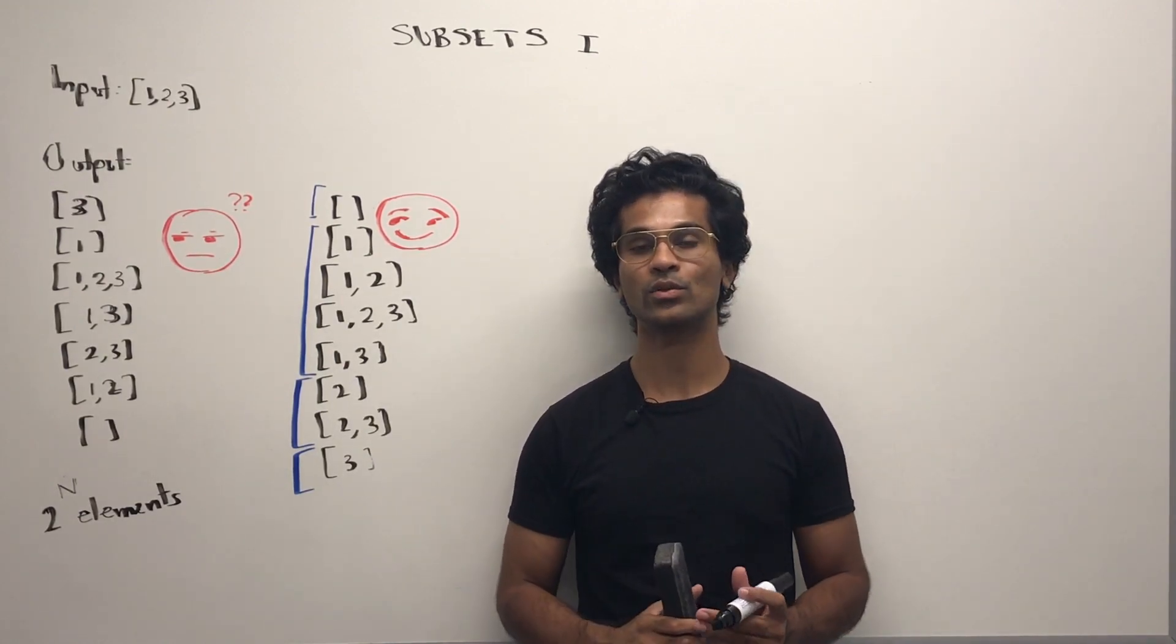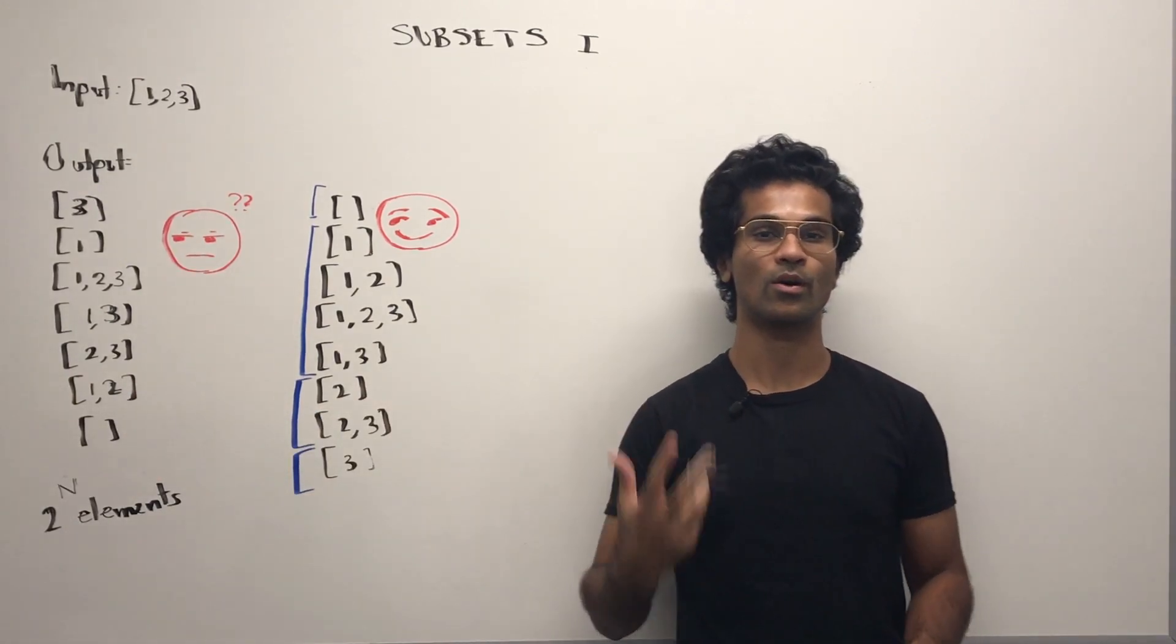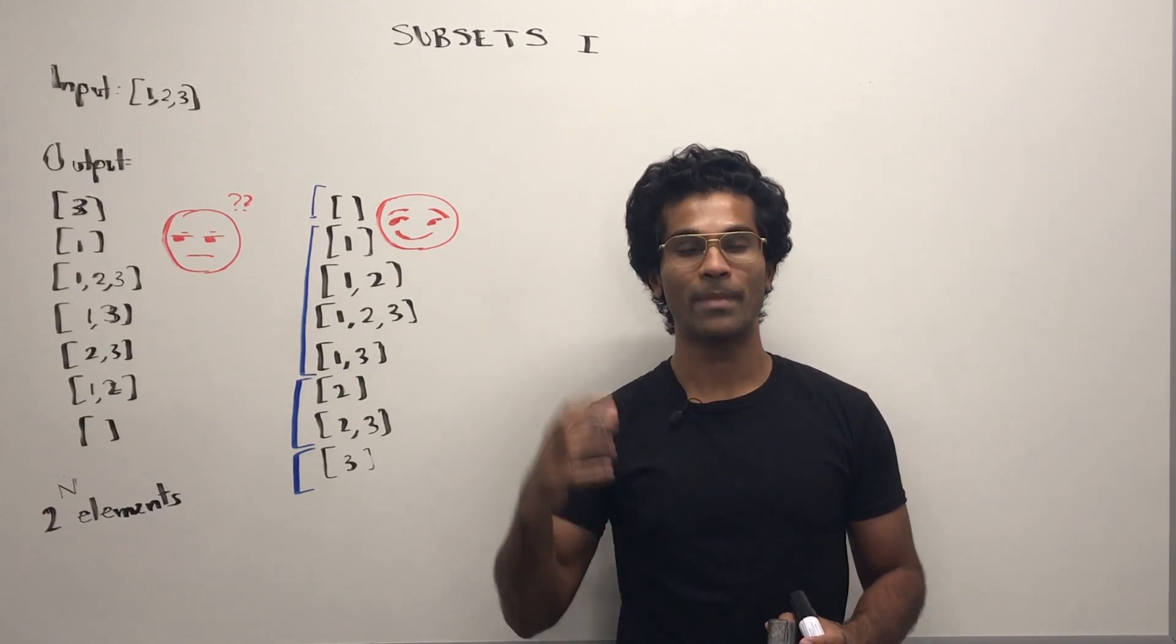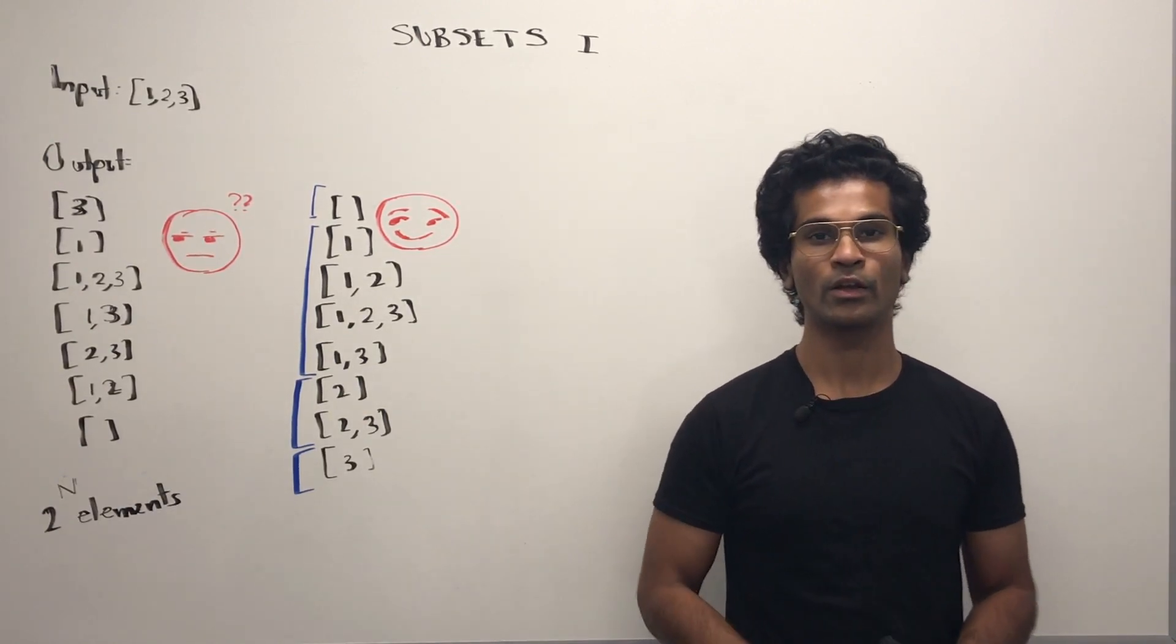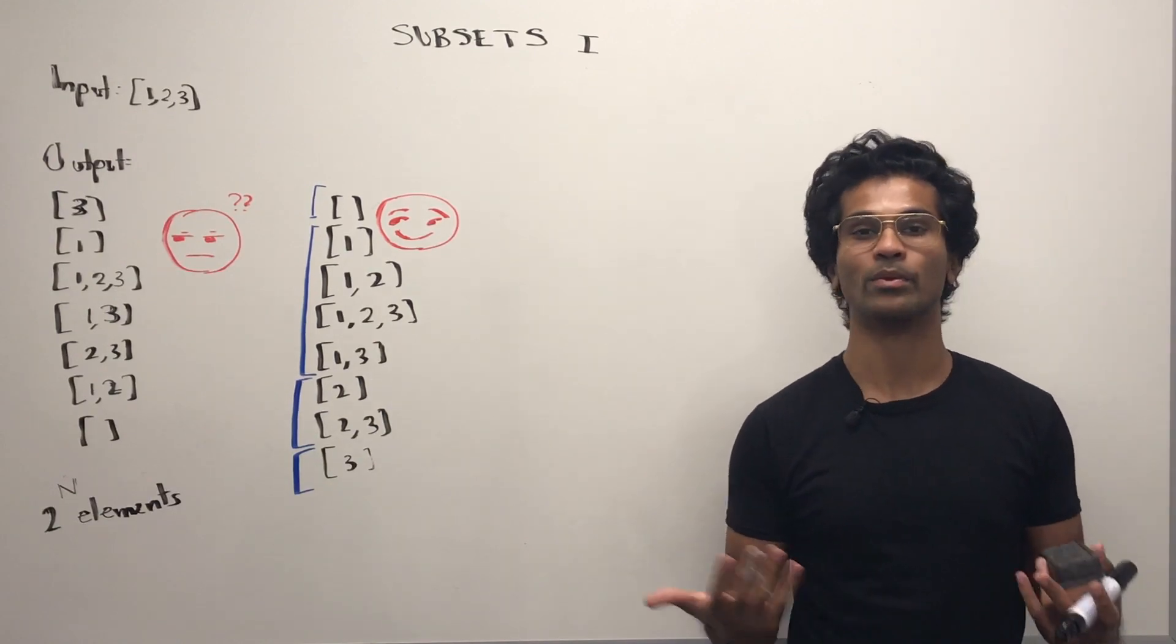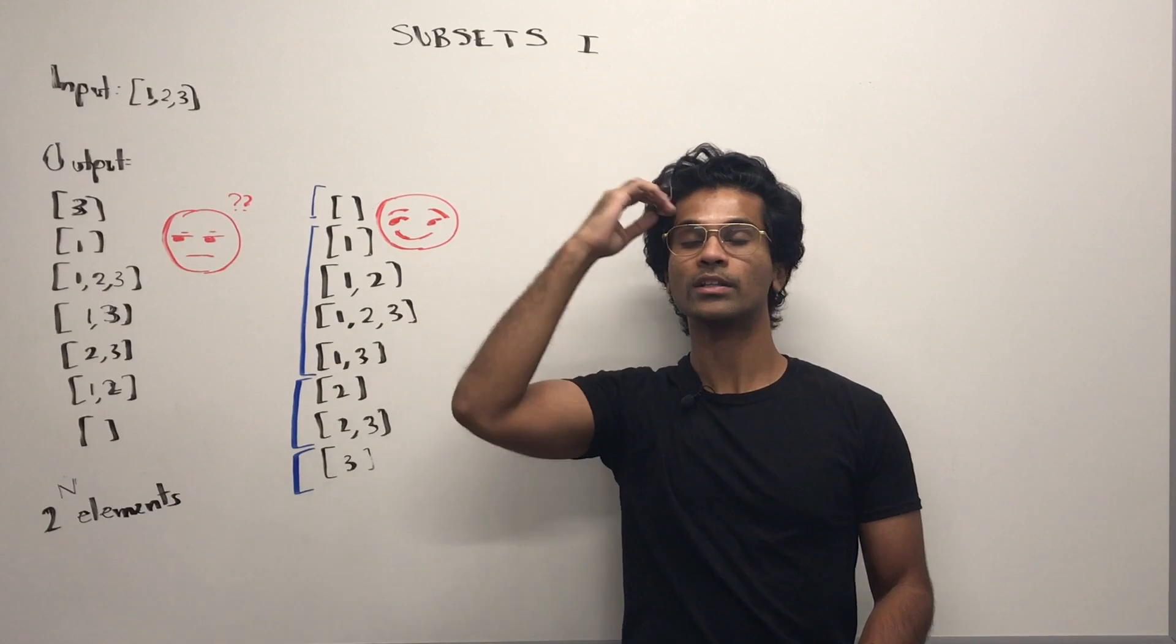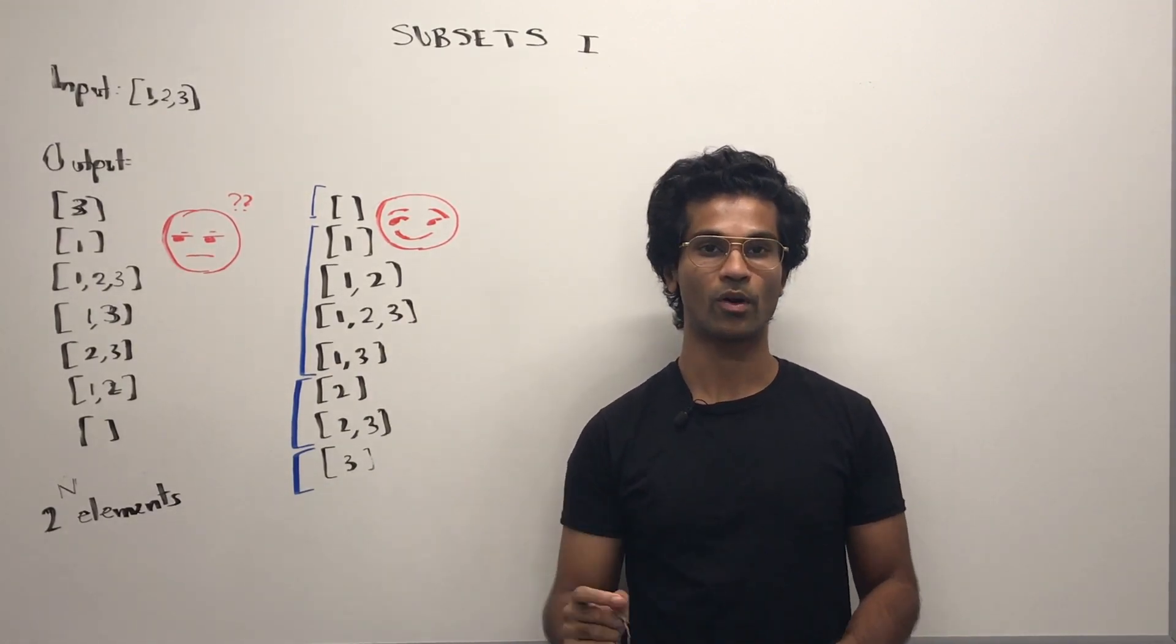First, let's disregard what the output they're showing us and try to come up with our own. Think of the approach and the code by imagining how you want these subsets to get generated. So if I have a blank sheet of paper and I got this integer array and I'm trying to generate the subsets, what I would do is start small and simple.